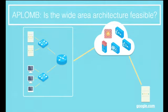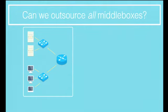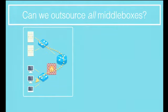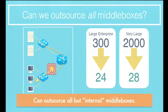The other thing we wanted to know from APLOM was whether we could provide equivalent functionality for each middlebox. In implementing APLOM, we had an existence proof that it was indeed possible — we could outsource all but one category of middlebox. The devices we can't outsource are internal middleboxes, which are almost always firewalls. Internal firewalls prevent one region of a company from talking to another — for example, preventing sales from accessing R&D servers. Outsourcing such a device would require bouncing everything to the cloud and back, which would be expensive. These are a small fraction of devices, however. By outsourcing everything except internal middleboxes, a large enterprise in our survey would go from about 300 middleboxes down to 24, and a very large enterprise would go from about 2,000 down to 28.